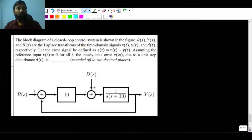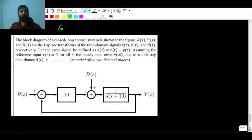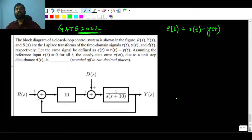This question was for two marks from the control system, it was a very easy question. This problem was asked in GATE 2022 and there is a block diagram given. The block diagram of a closed loop control system is shown in the figure. R(s), Y(s), and D(s) are the Laplace transforms of the time-domain signals r(t), y(t), and d(t) respectively. Let the error signal be defined as e(t) = r(t) - y(t).